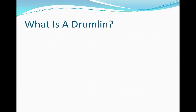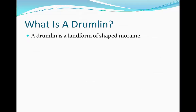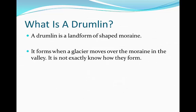What is a drumlin? A drumlin is a landform of shaped moraine. It happens when a glacier moves over moraine that's deposited in the valley. It's not exactly known how they form, but we can theorise how they come about.